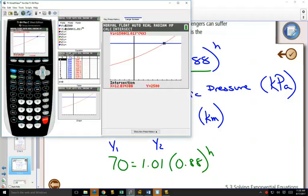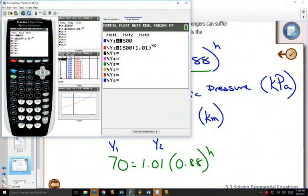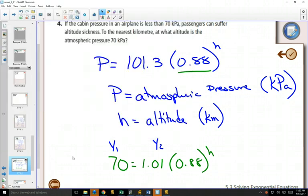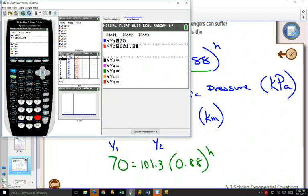we're going to use our graphing calculator. Here, in y1, we're going to put in 70. And in y2, 101.3... Oops. Did I totally write this down wrong? 101.3. That is the atmospheric pressure at sea level, 0.88 to the power of x.